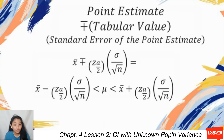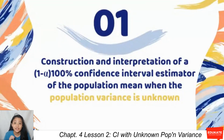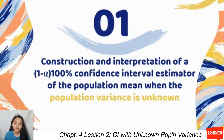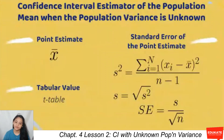But how about if the variance is unknown? How do we compute the confidence interval estimation? When the population variance is unknown, there is a slight change in the construction of the confidence interval. The changes involve the tabular value and the standard error of the sample mean.